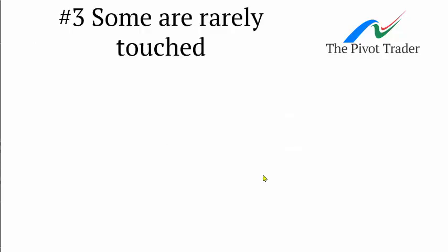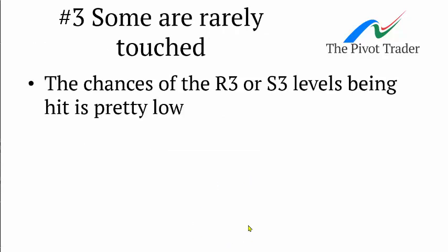Number three: some levels are very rarely touched. The chances of the R3 or S3 levels being hit is pretty low — something like three to seven percent, depending on the pairing and the trend the market has been running in. Generally, even as an outlier at ten percent, it's pretty low over any period — whether you're looking at monthly, weekly, or daily pivots.